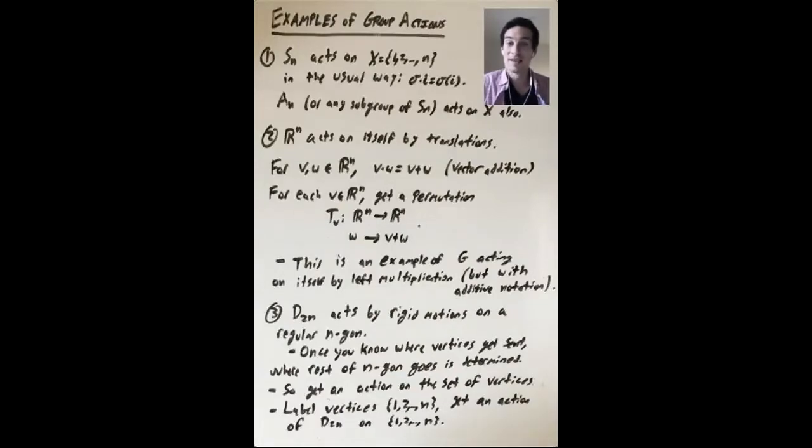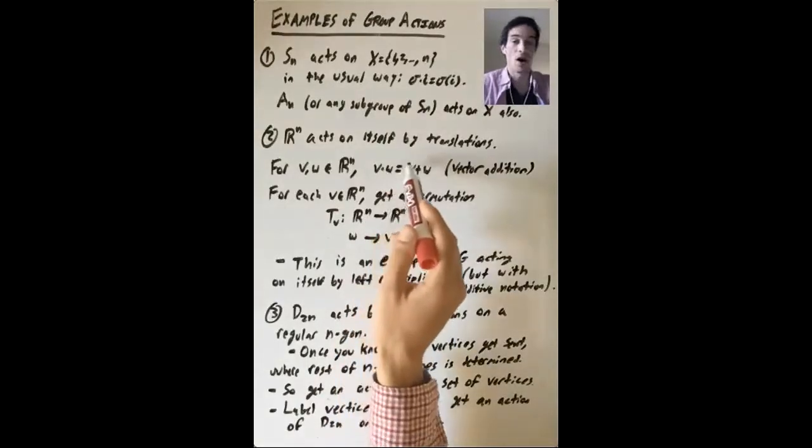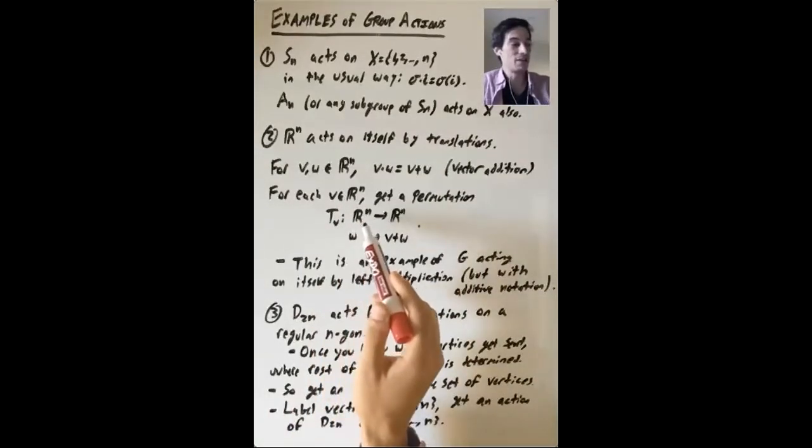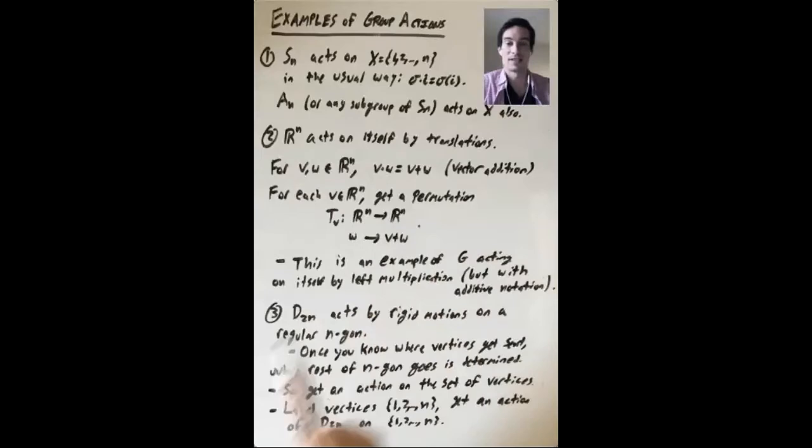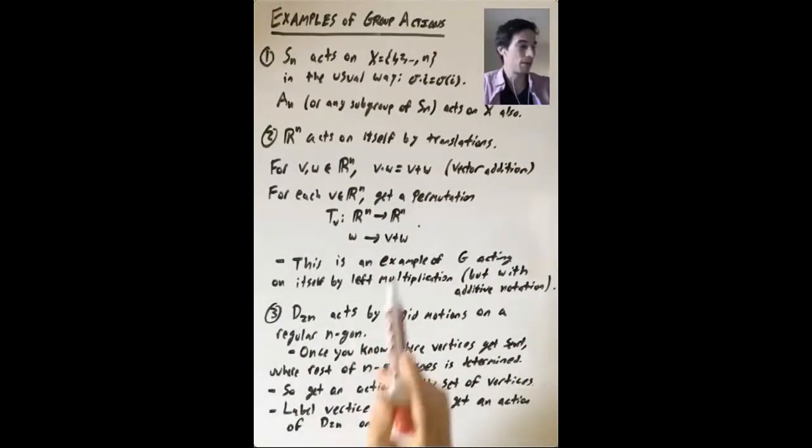So if you fix the element of your group Rn, if you fix v, then you get a permutation of Rn. As you vary over all w, you get all the other vectors in Rn. So what's going on in this example? This example is a group acting on itself by left multiplication, except this group uses additive notation, so it's the same thing, but we're using the plus notation instead of the dot for the group operation.